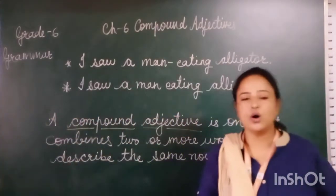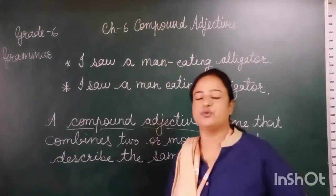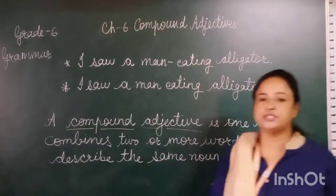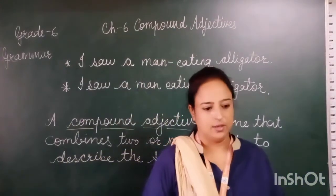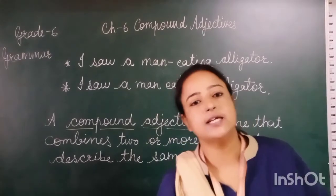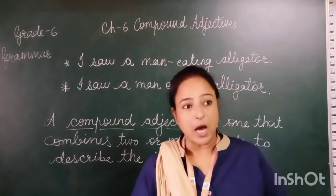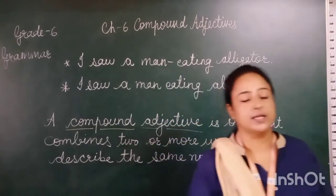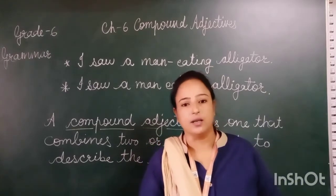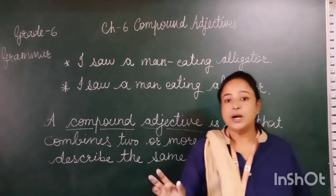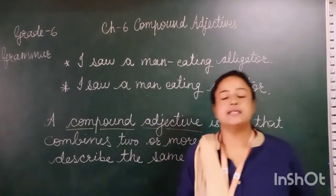Hello students, today I am back with a new chapter from grammar land: compound adjectives. First of all, what is an adjective? An adjective is a word that describes something about a noun. For example, Rena is a beautiful girl — 'girl' is a noun, and 'beautiful' describes what type of girl she is, so 'beautiful' is an adjective here.